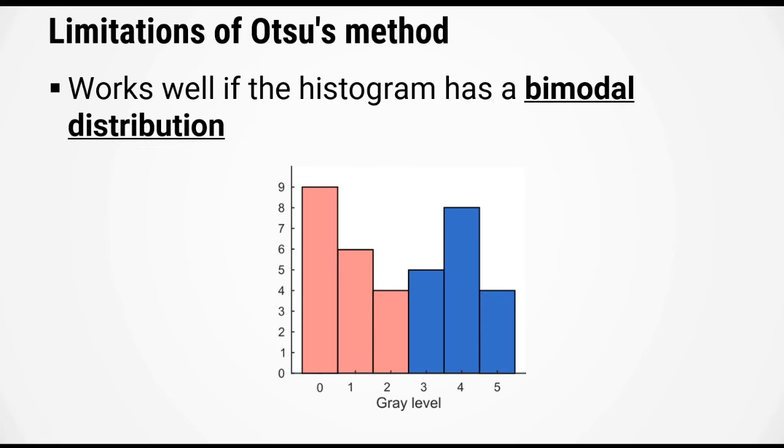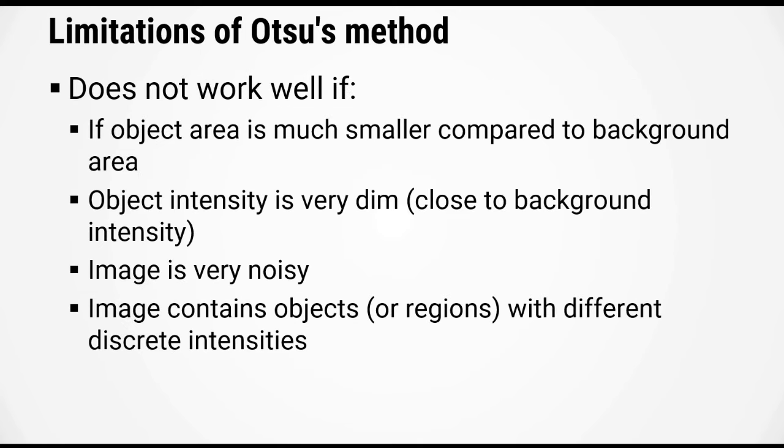Like any algorithm, Otsu's method has some limitations. The algorithm only works well if the intensity histogram has a bimodal distribution, meaning there are distinct values for the background and distinct values for the foreground. There are situations where your histogram might not have a bimodal distribution, for example if the object area is much smaller compared to the background area, if the object intensity is very dim, if the image is very noisy, or if the image contains objects with different discrete intensities.